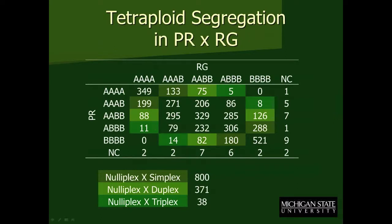This table shows the frequency of the different SNP combinations we have in this population. On the left-hand side you can see the Premier Russet genotypes and across the top the Rio Grande genotypes. Shaded in color, the nullaplex by simplex adds up to 800 markers that we can use. Interestingly, the tetraploid map software has a maximum of 800 SNPs.